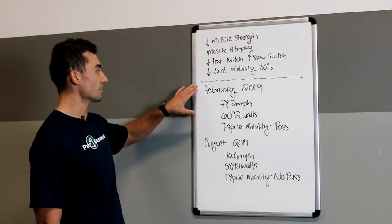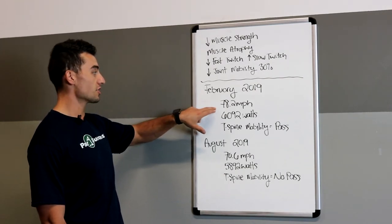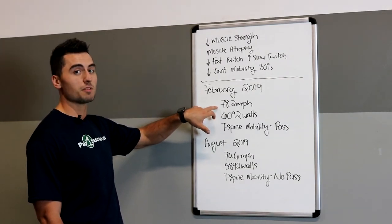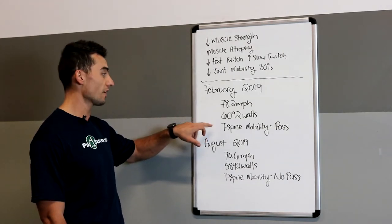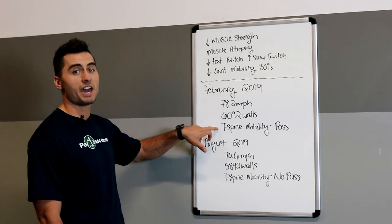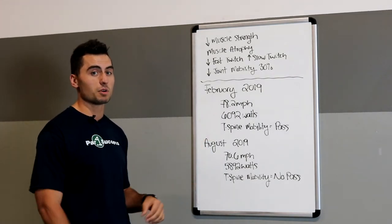She's a female golfer. This was her test numbers in February of 2019. Her swing speed - she was swinging 78.2 miles an hour. She was generating over 6,000 watts of vertical peak power and her T-spine mobility was a pass. Actually, her entire mobility was a pass. She passed every single mobility test.